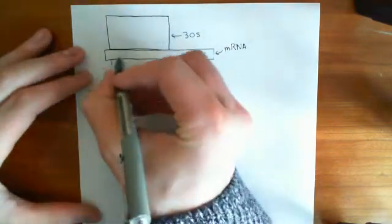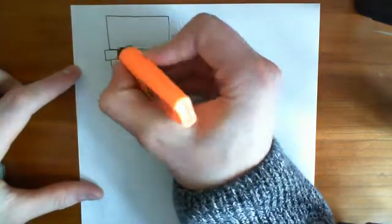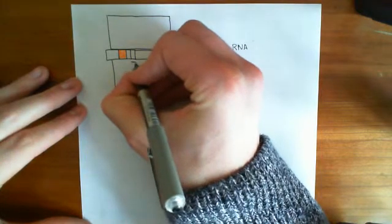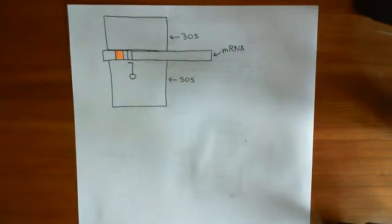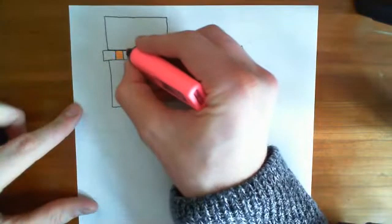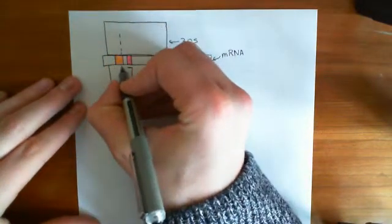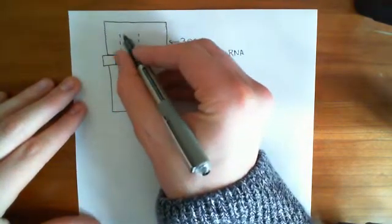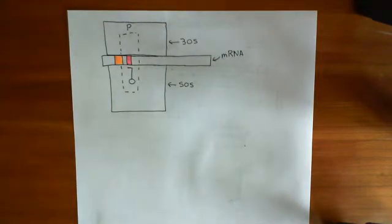On the mRNA, you have this Shine-Dalgarno sequence, which is what originally bound to the 30S ribosomal subunit. You also have the start codon AUG on the mRNA, which is bound to our anticodon UAC. That tRNA, which has the complementary anticodon to the start codon, has a formylmethionine group bound to it. This site, which the formylmethionine-tRNA and the start codon are currently in, is known as the P site of the ribosome.